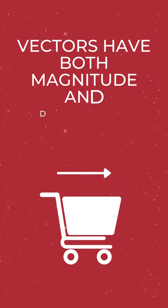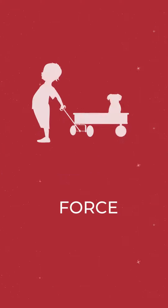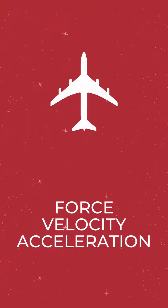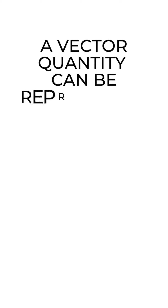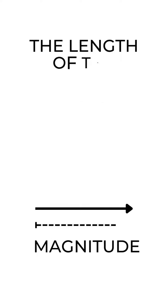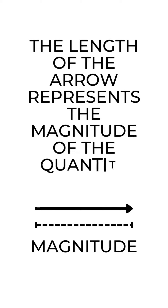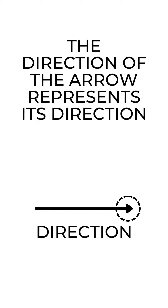Vectors have both magnitude and direction, such as force, velocity, and acceleration. A vector quantity can be represented by an arrow, where the length of the arrow represents the magnitude of the quantity, and the direction of the arrow represents its direction.